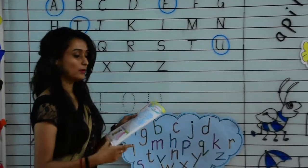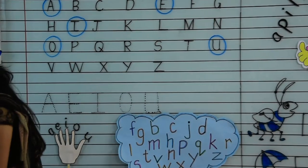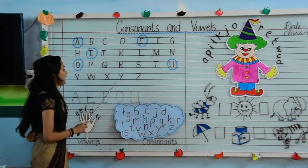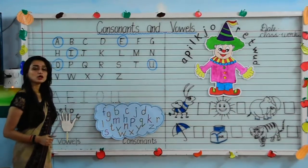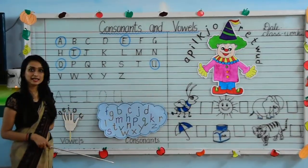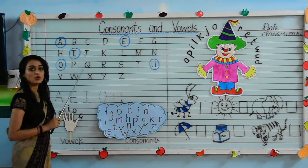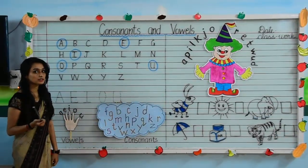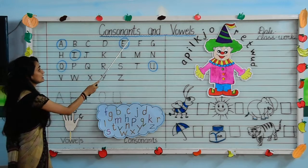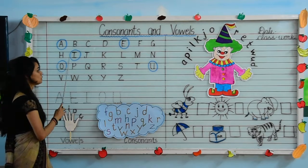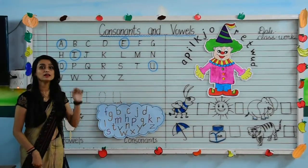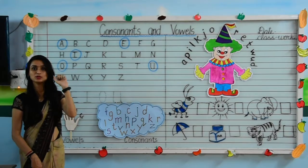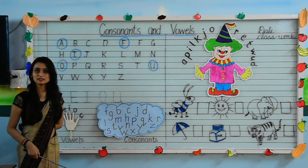The first question says: read the alphabets aloud. As you can see, I have written all the alphabets and I have circled some of the letters. The circled letters are vowels — A, E, I, O, and U. These are all five vowels.